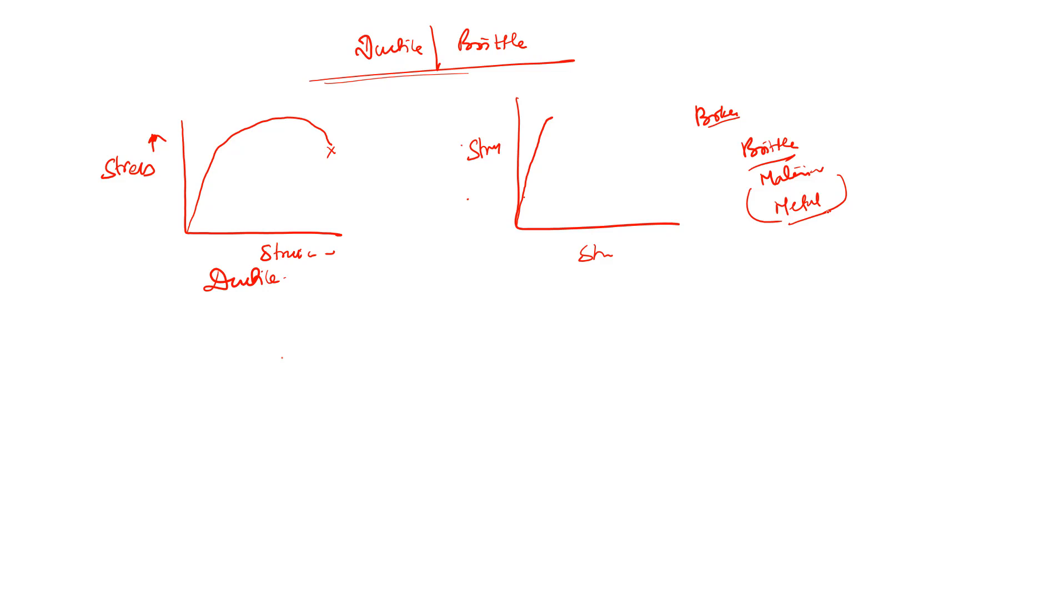Now guys, if the failure happens then what are the things which happen inside the material? So till now here you can see, suppose this is the ductile one and we are getting the failure over here, then we have got this elastic deformation, right? Then we also have this plastic deformation and ultimately the fracture.